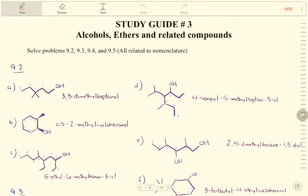Solve problems 9.2, 9.3, 9.4, and 9.5 — they are all about nomenclature. For this one: a 5-carbon chain, and at carbon 3 there are two methyl groups, so it is 3,3-dimethylheptanol. This is cis because they are on a wedge — it is 2-methyl-2-cyclohexanol.